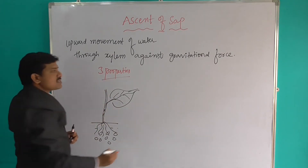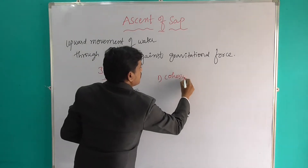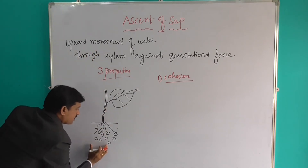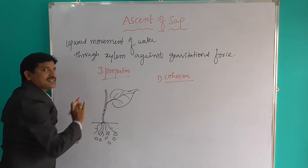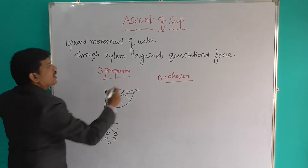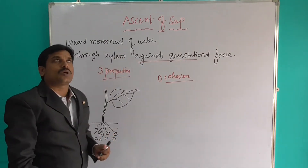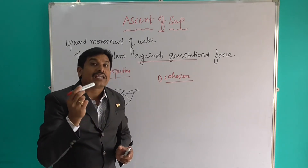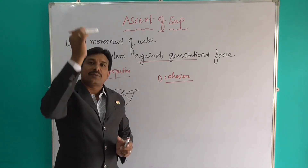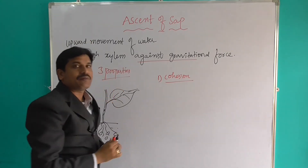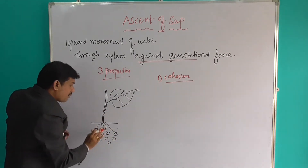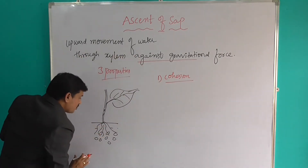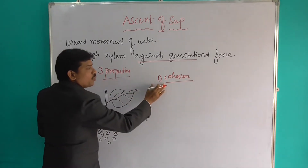First, what is the first property? The first property is cohesion. What is meant by cohesion? Here, the upward movement of water through xylem is against its gravitational force — just like throwing something upward, the gravitational force brings it back down. That is gravitational force acting on earth.